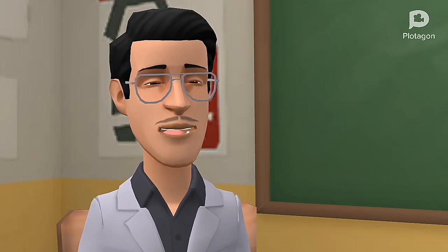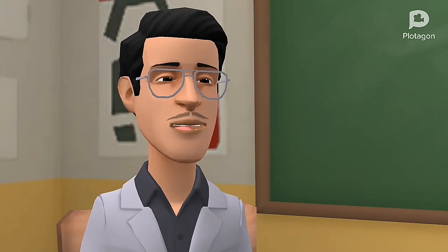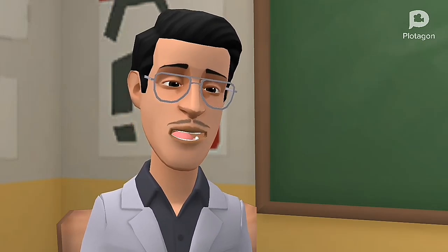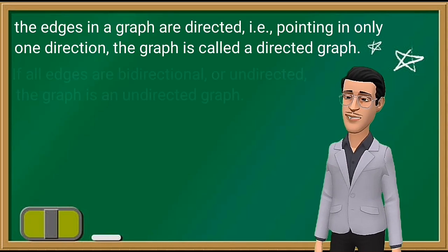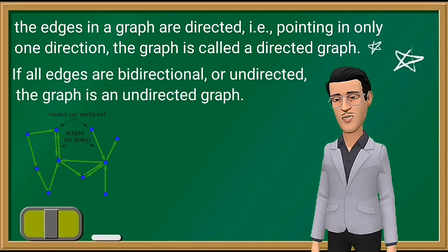Basically, a graph is depicted in the form of a diagram as a set of points, angles, or vertices combined with curves, lines, or sides pointing in only one direction. The graph is called a directed graph, or sometimes digraph for short.